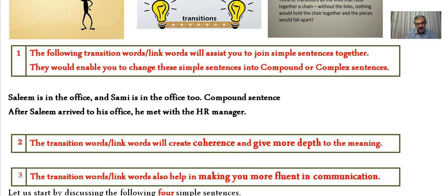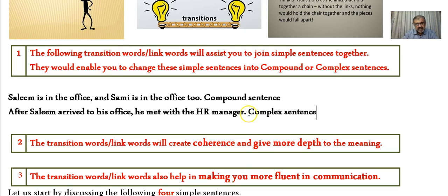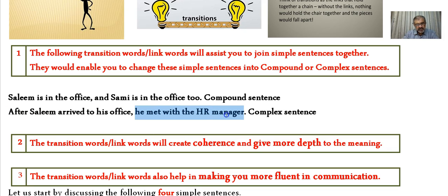Why is 'After Salim arrived to his office, he met with the manager' a complex sentence? A complex sentence is a sentence joined between an independent clause and a dependent clause. As you can see, the link word here is 'after', which is a conjunctive — but also a transition word.